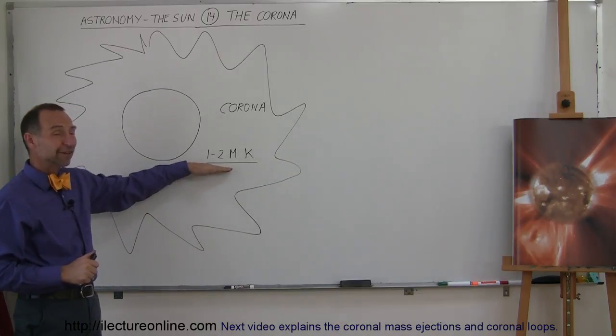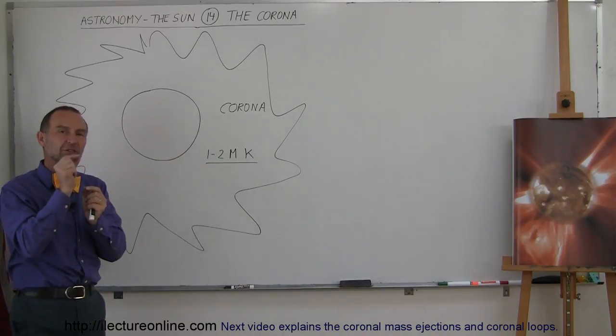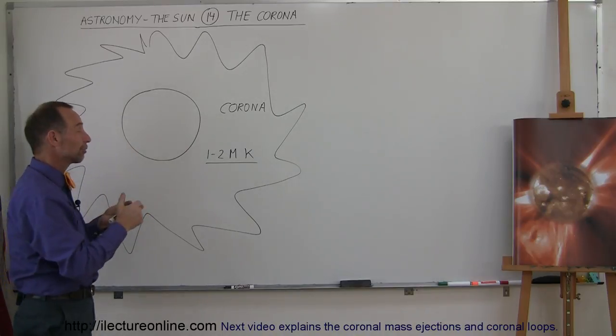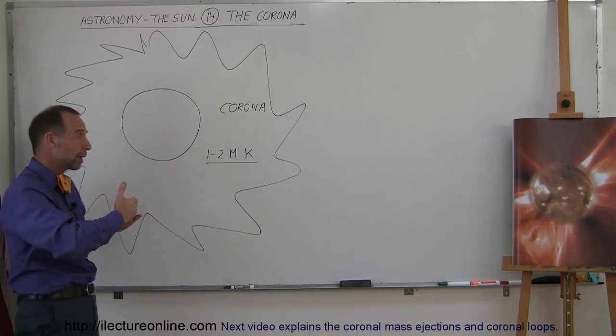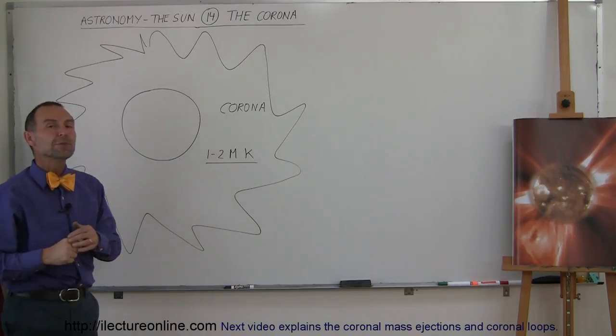Now the temperature of the corona varies from 1 to 2 million degrees Kelvin. We talked about the transition zone where the temperature from the chromosphere to the corona, which is a very thin layer, goes from about 25,000 Kelvin all the way up to a million Kelvin. And then beyond that, the temperature reaches as much as 2 million Kelvin.